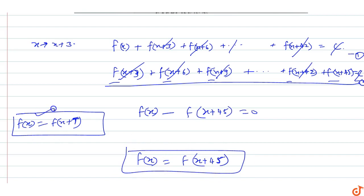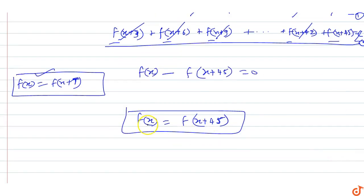If f(x) equals f(x+T), where T is the period, then from f(x) equals f(x+45), the period T equals 45.